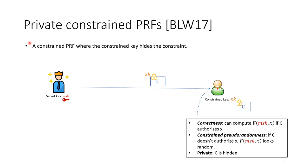In 2017, Boneh, Lewi, and Wu strengthened the notion of constrained PRFs and introduced private constrained PRFs. A private constrained PRF is a constrained PRF where the constrained key hides the constraint or predicate C. The constrained key satisfies three properties: the first two are correctness and constraint randomness, and the third property says that the constrained key hides the predicate C.